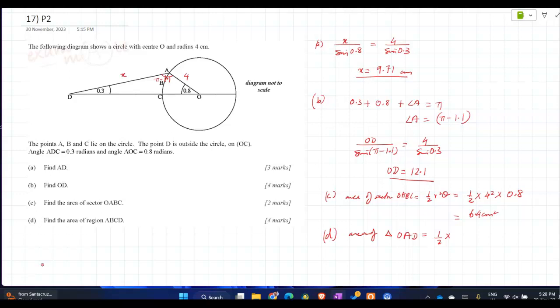So half of... I mean, all we found. 9.71 into 4 into sine of the included angle. So 0.5 into 9.71 into... Yeah, I am using the same thing. Into sine of pi minus 1.1.